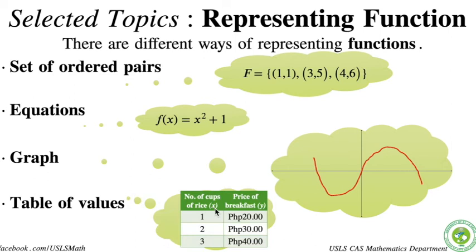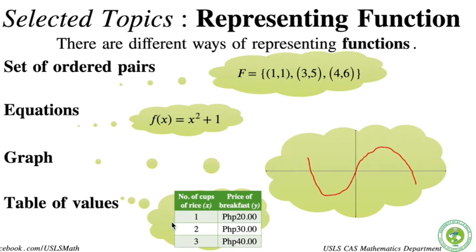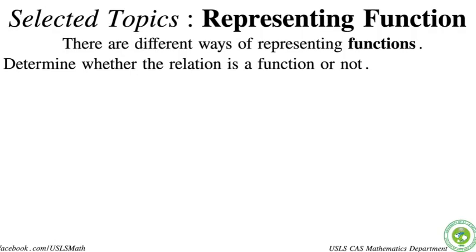Anyways, this table of values is just a fancier way of writing sets. So you could put, instead of (1,1), you could put 1 to 20, 2 to 30, 3 to 40, and it would look like this. Only that this table of values will look like it's in a tabular form, of course, rather than this mathematical notation of sets. So they are really one of the same anyways. So we're going to determine whether the relation is a function or not. So given those different representations that we have last slide, we're going to determine if this is a function or not.